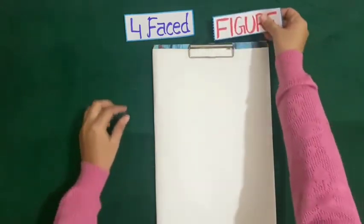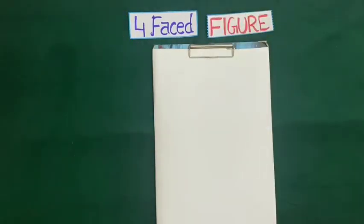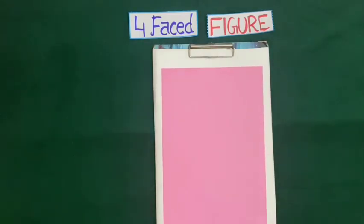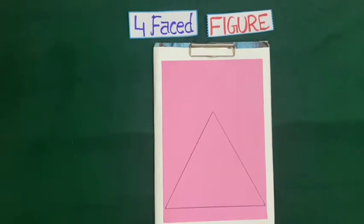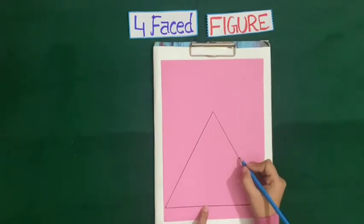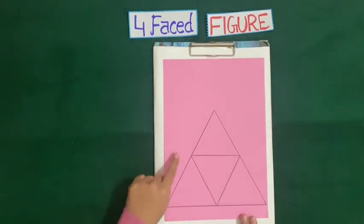First of all we will make a four-faced figure. For this we will take a paper, then draw a diagram on this paper with help of pencil and scale. Now we have drawn a triangle on this paper. Now we will draw a smaller triangle by marking the midpoints on these three lines. Now we will label the sides of the triangle.